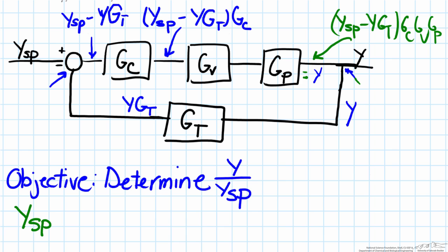Here we will factor out ysp times Gc, Gv, Gp minus yGt times Gc, Gv, Gp will equal y.